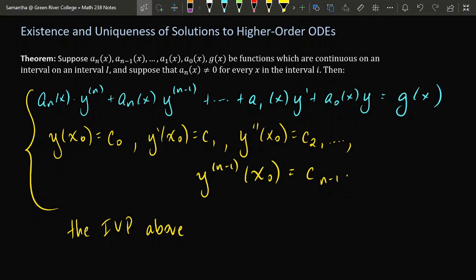Once again, the key is continuity. In order to guarantee the existence of a unique solution, we need all of these functions of x, including the one on the far right, to be continuous on an interval called I. We also need to make sure that this function of x in the front is non-zero for every x in the interval called I. If those conditions are satisfied, if all these functions are continuous, and the guy in the front is never zero, this initial value problem has a unique solution.